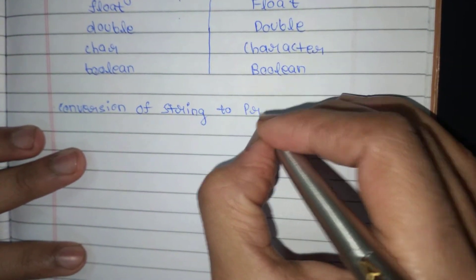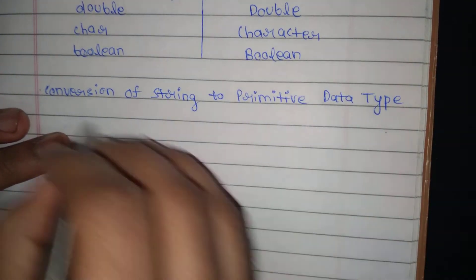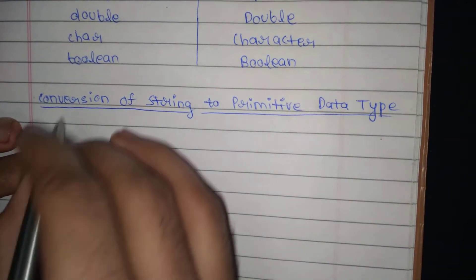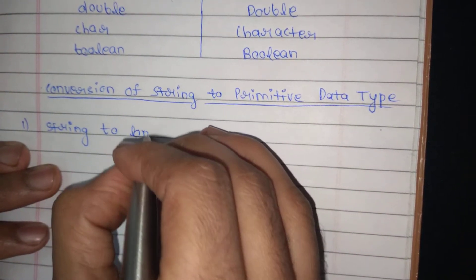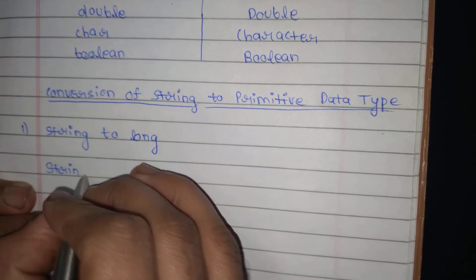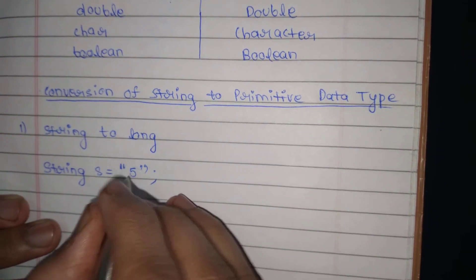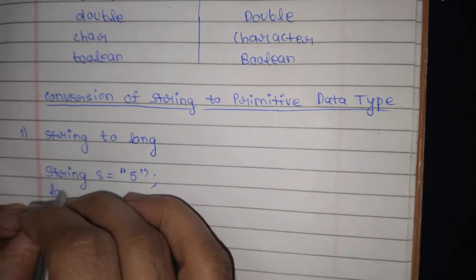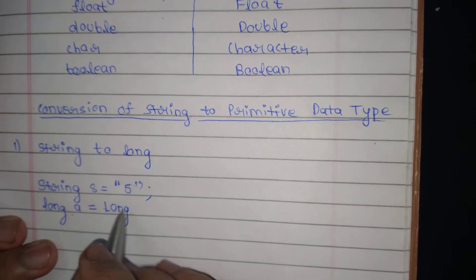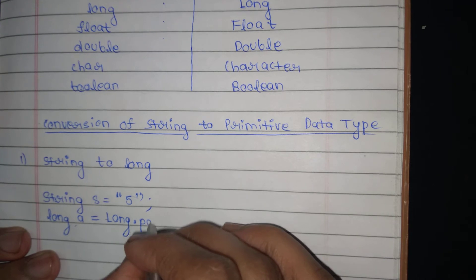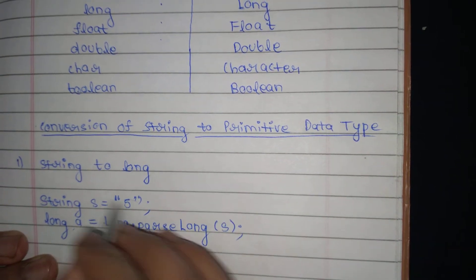Now, conversion of string to primitive data type. First one: string to long. Suppose I am taking a string variable s equal to 5 — it will not be an integer but a string because it is in double quotes. To convert this to long, I will take another variable: long a is equal to Long — capital L, using the wrapper class — dot parseLong, and then s, the variable you want to change to long. The output would be 5.